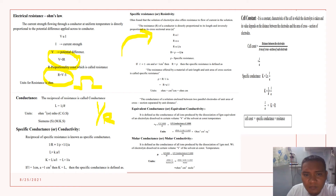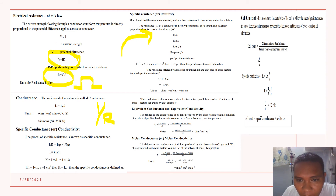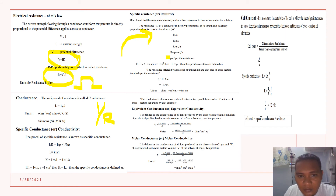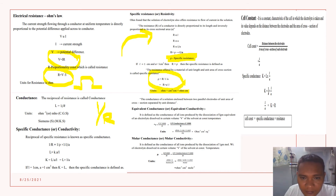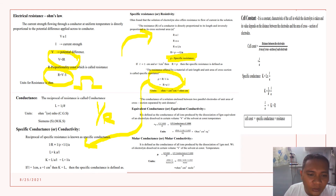Specific resistance: a solution of electrolyte offers resistance to the flow of current. The resistance of a conductor is directly proportional to its length and inversely proportional to its cross section. The resistance offered by a material of unit length and unit area of cross section is called specific resistance. So, rho (ρ) is equal to resistance divided by the length times the cross section. Then specific conductance is the reciprocal of specific resistance, and it is defined as the conductance of a solution enclosed between two parallel electrodes divided by the distance.